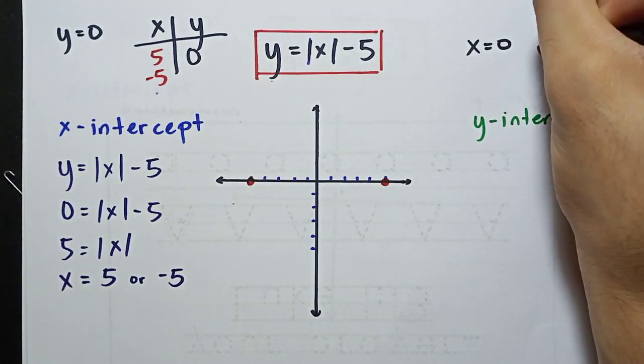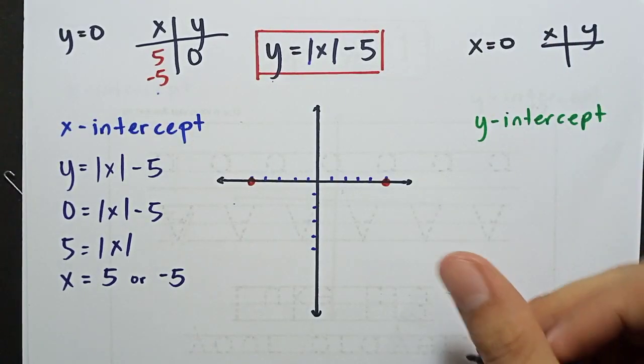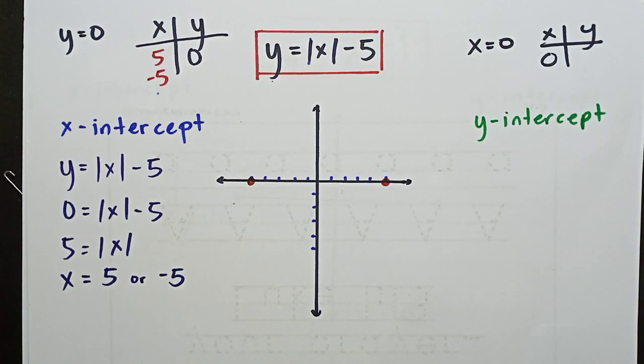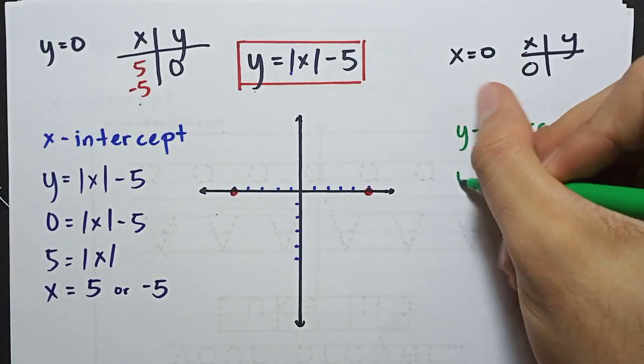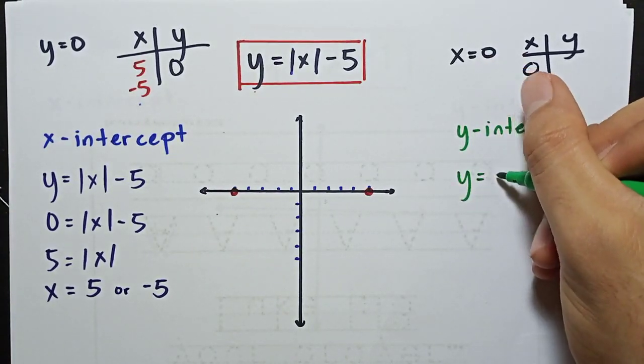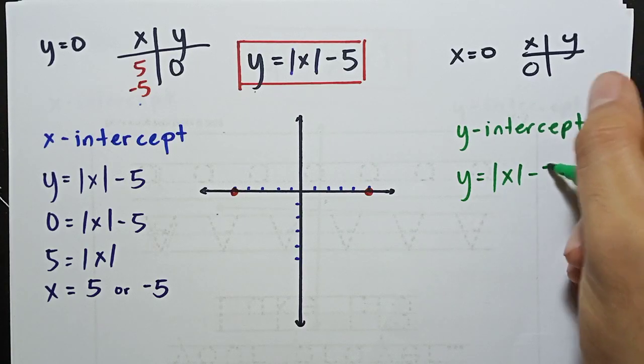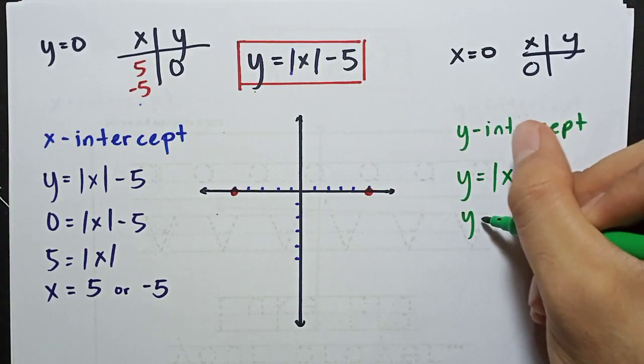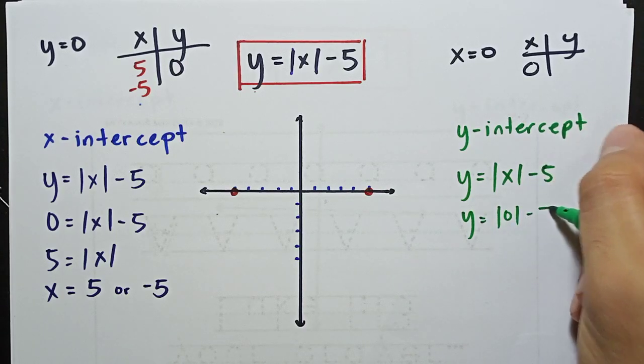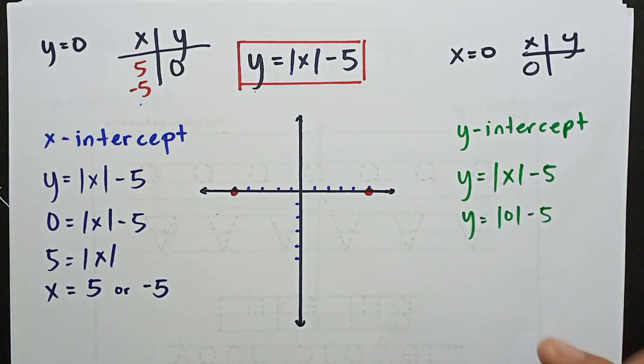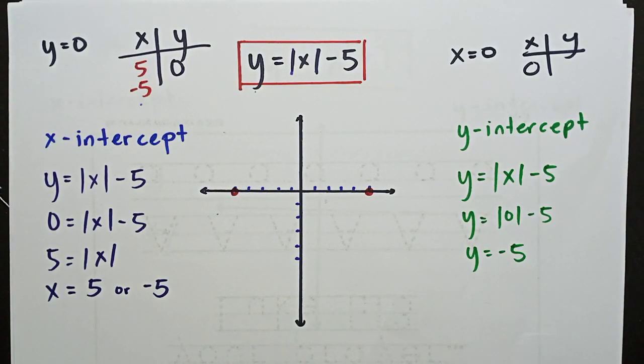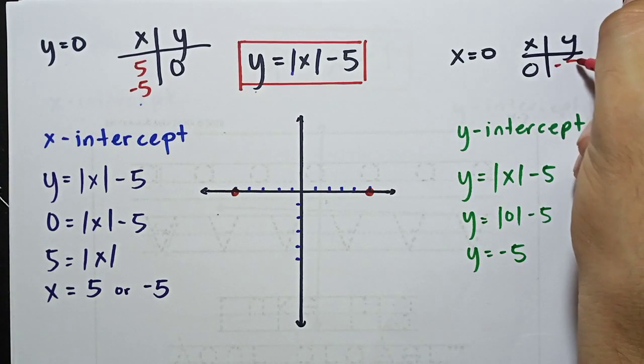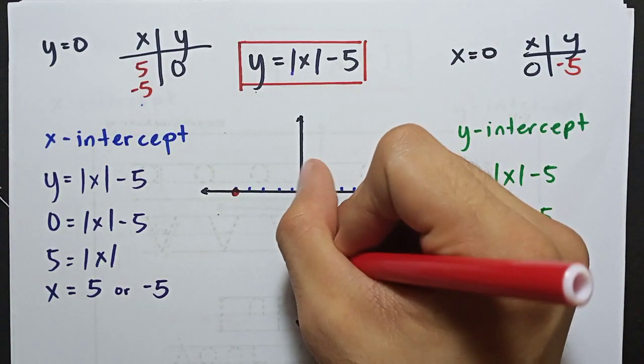So x equals to 0. Let's make a table. x, y. Our x should be 0. What is the value of y? That's what we'll find. It becomes y equals absolute value of x minus 5, where x equals 0. So y equals absolute value of 0 minus 5. And absolute value of 0 is simply 0. So 0 minus 5 is negative 5. Therefore, y equals negative 5. When our x is 0, our y is equal to negative 5. There. This is negative 5.